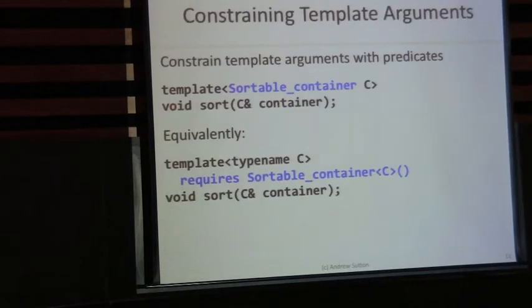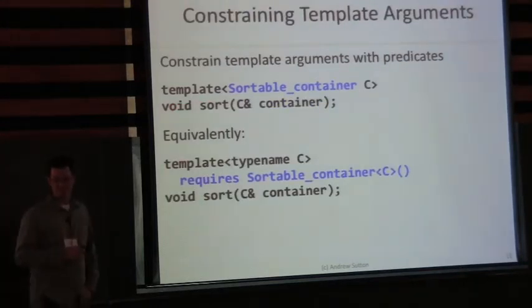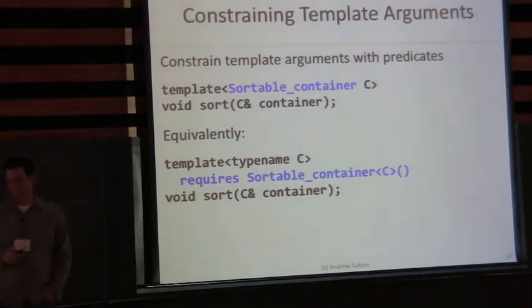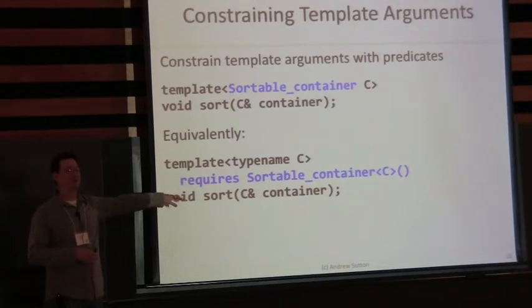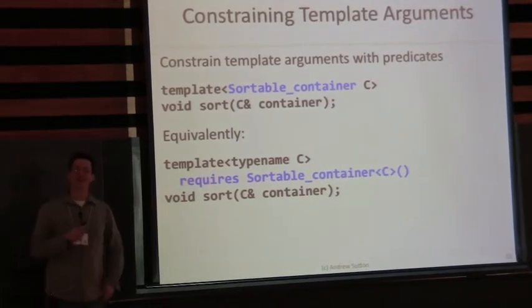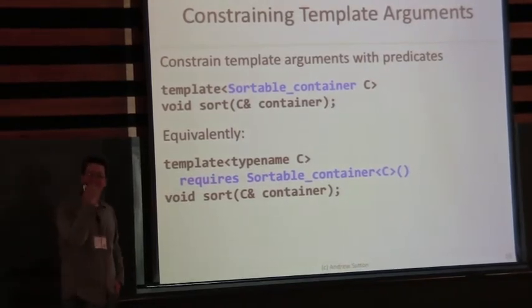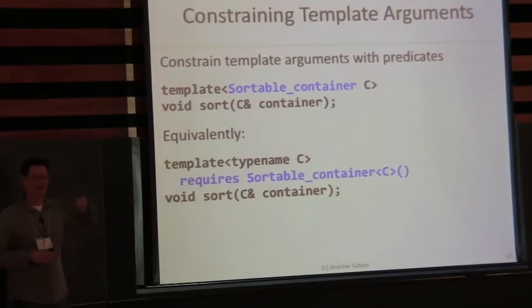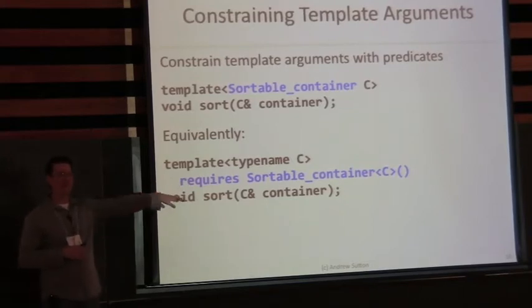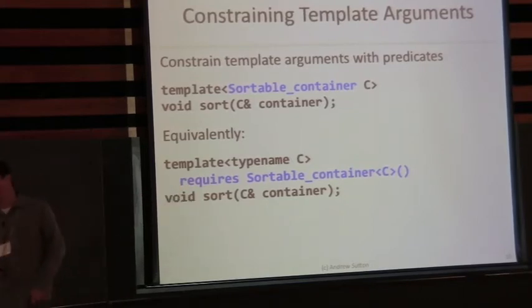When the requires clause evaluates to false, the declaration is not instantiated — the candidate is non-viable and is not included in overload resolution. So what does SortableContainer look like? Basically it's declared with the new keyword concept used as a declaration specifier — effectively meaning constexpr. It's just a constexpr function that returns something that evaluates the properties of sortable, like type traits.